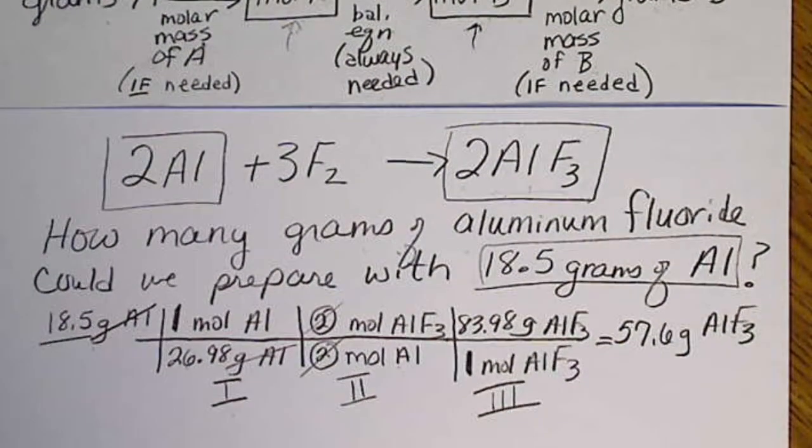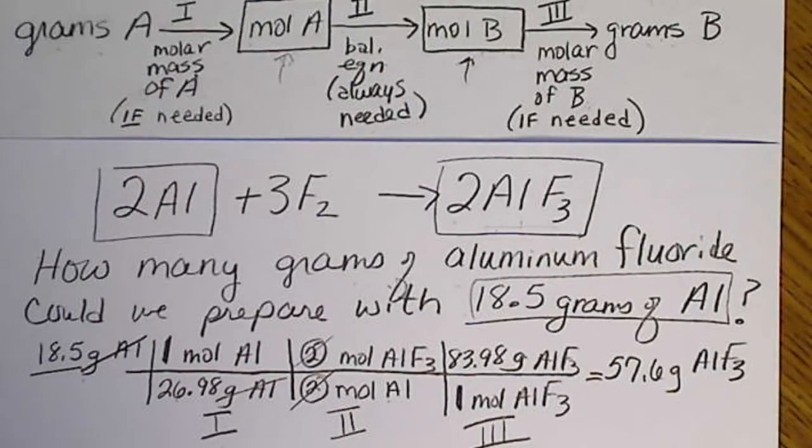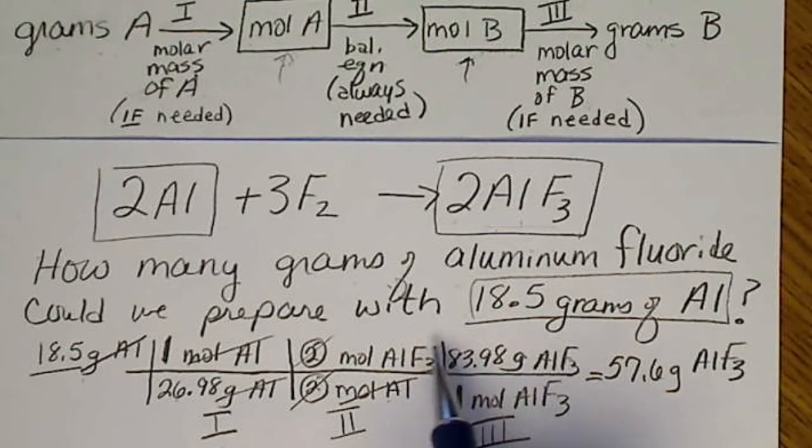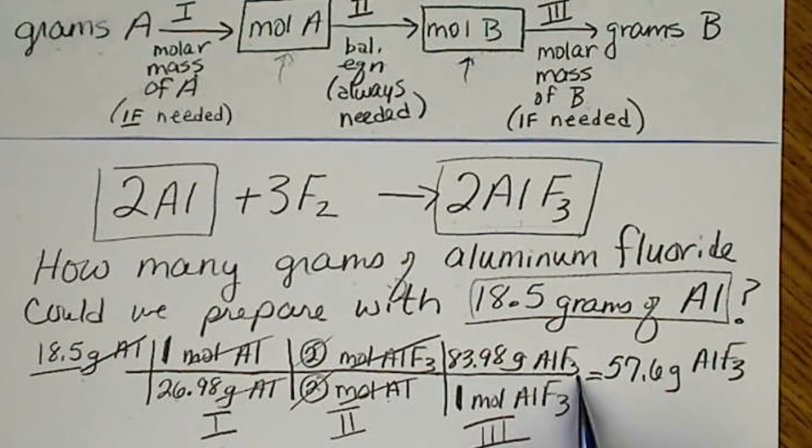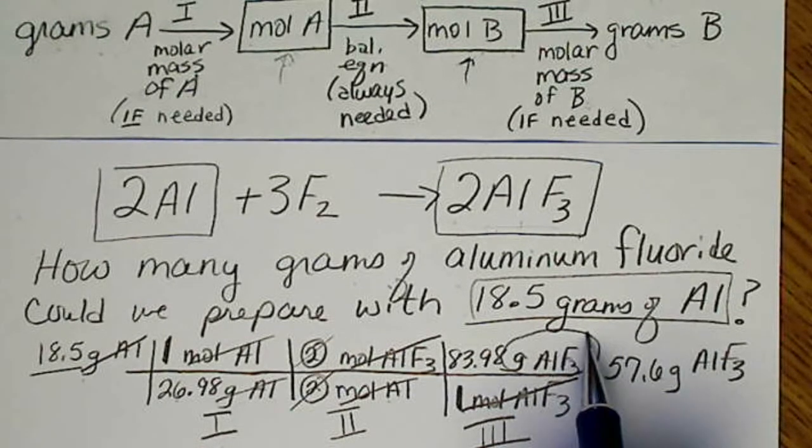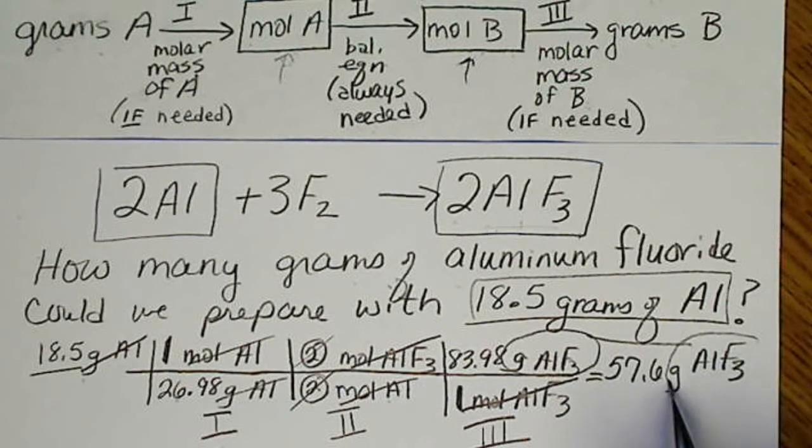except we can double check and make sure we did things correctly by making sure that all the units cancel. Moles of aluminum cancels moles of aluminum. And aluminum fluoride in moles cancels aluminum fluoride. So again, the only unit that does not cancel ends up over here.